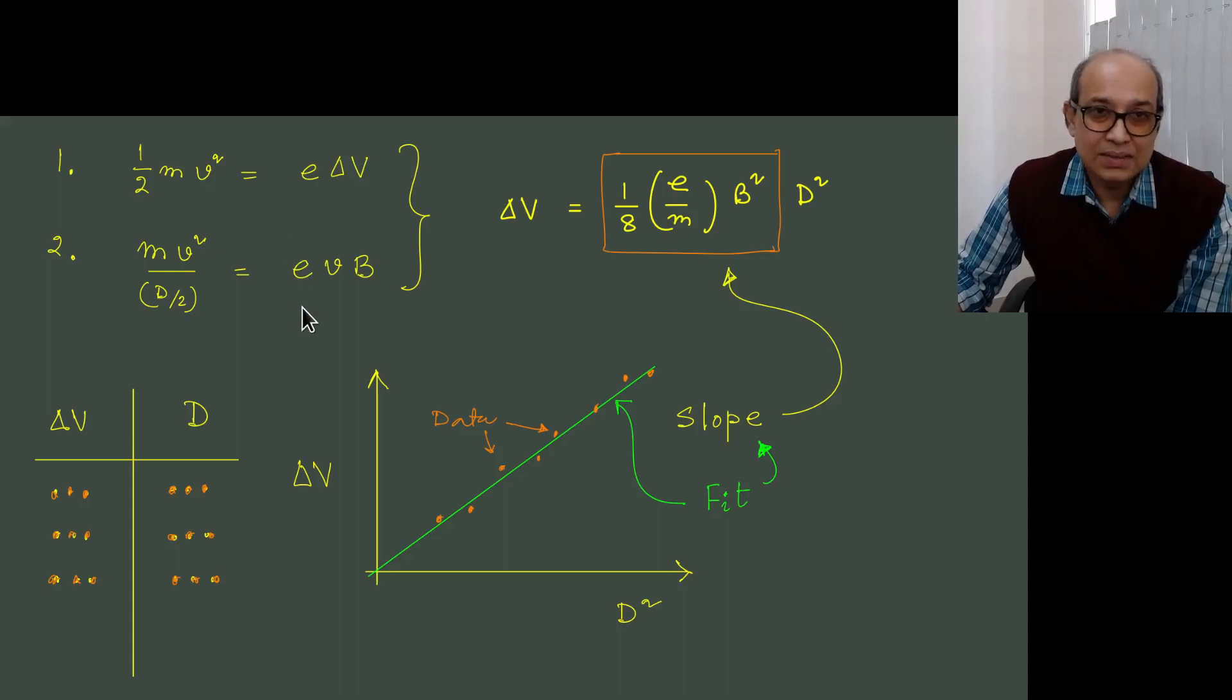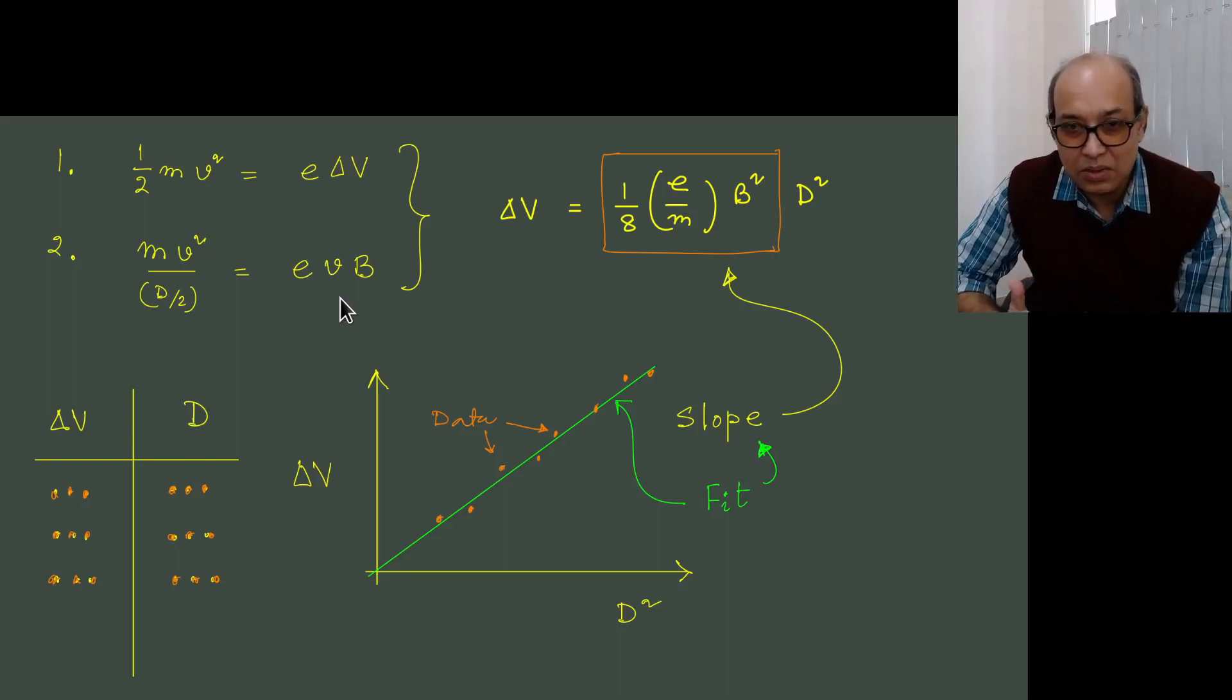On the other hand, this Lorentz force which is E times V times B, the cross product usually has the sine of the angle between V and B, but in our case the velocity and the magnetic field, the two vectors are perpendicular to each other. So theta is 90 degrees and sine 90 degrees is 1. So we have the Lorentz force given by E times V times B, and that must be equal to for a circular trajectory mass times square of velocity divided by the radius.